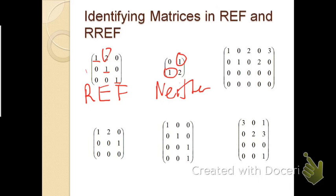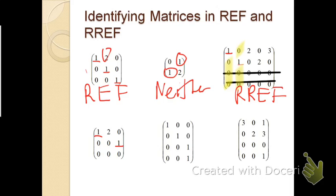For the third matrix, we have leading ones with rows of zeros at the bottom, and zeros both above and below the leading ones, so this is RREF. The fourth matrix also has leading ones with zeros above and below, so this is also RREF.